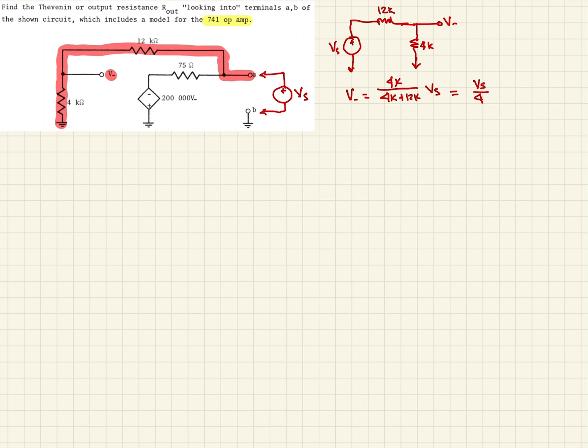So now we have our input voltage in terms of our voltage we put across the output. So now we want to turn our attention to this dependent source here. So we see that the dependent source is defined as 200,000 times V dash. But we've got an expression for V dash right here. So we can substitute that in. So if we do, that'll be 200,000 times VS over 4. So if we calculate that out, that comes to be about 50,000 times VS.